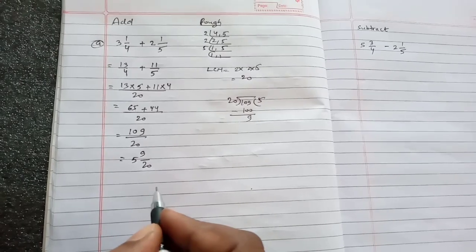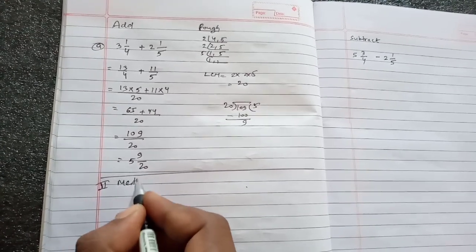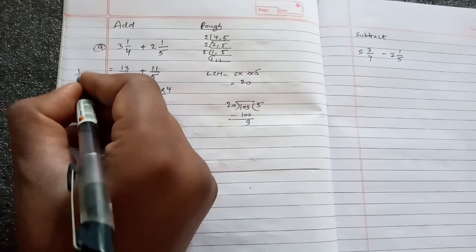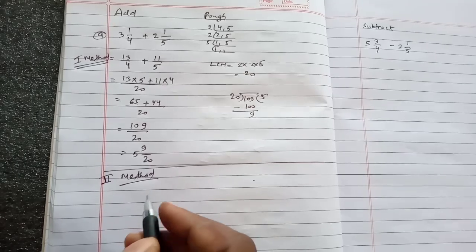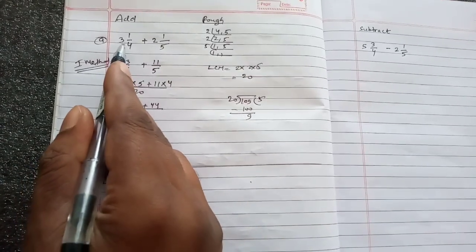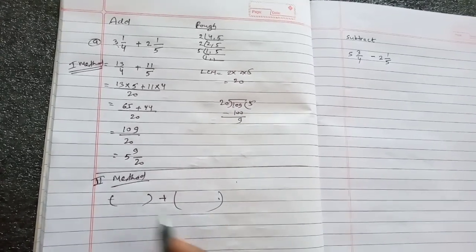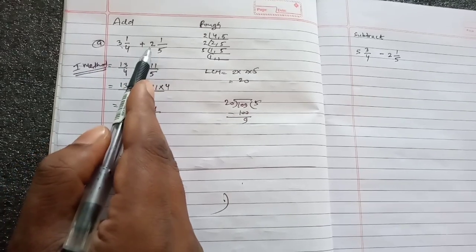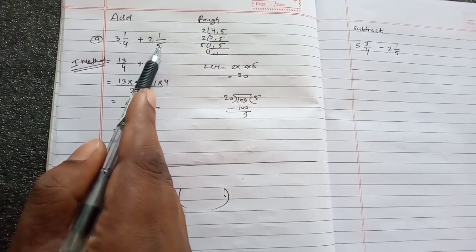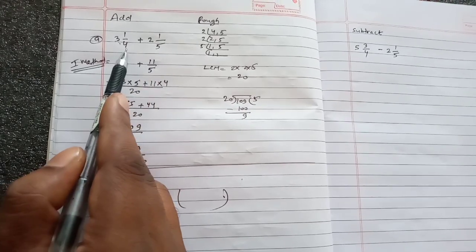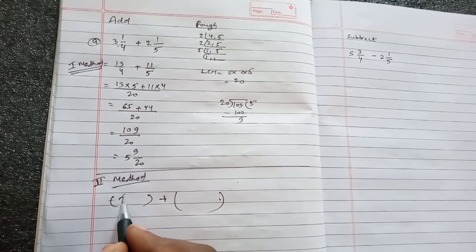There is another method also. This is method 1. Now this is method 2. In method 2, simply what we have to do is take this 3 and 2 whole numbers and write them in a bracket, and the fractions 1/4 and 1/5 in another bracket. So first of all, write here 3 plus 2.